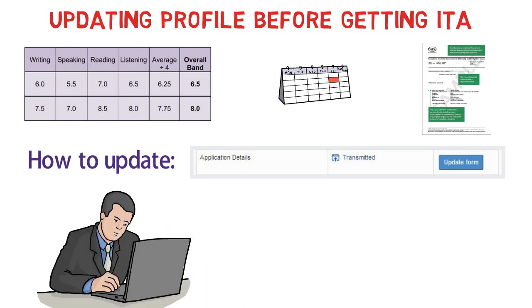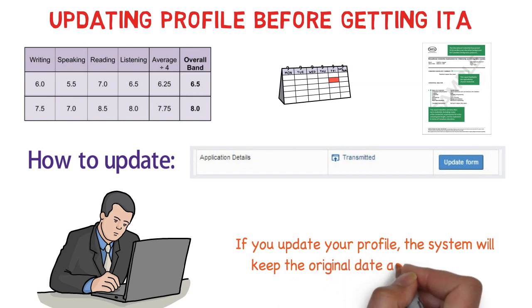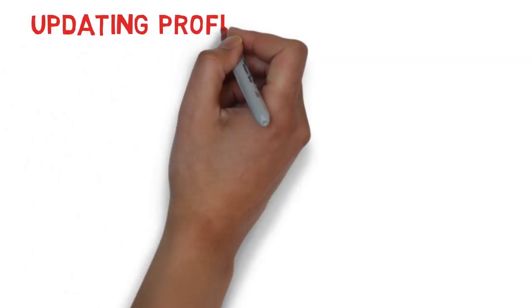Many people also ask: if they update their profile, will it affect the tie-break rule? Good news — if you update your profile, the system will keep the original date and timestamp when you first submitted your profile. So even if you update your profile a couple of times, the system will only keep the date when you first submitted it.